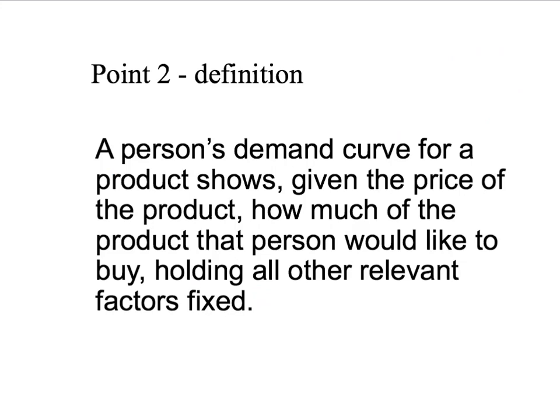Let's give our formal definition. A person's demand curve — notice we're starting with an individual person. Later on in the course, we're going to be looking at market demand curves, but for the moment we're thinking of one person and their demand. So a person's demand curve for a product — our product here is going to be apples — shows, given the price. Notice that we have our price-taking assumption for buyers built into the demand curve. The demand curve only makes sense when we have our price-taking assumption. Given the price of the product, how much of the product would that person like to buy? That's also important: the demand curve tells us what people would like to do, or what they would plan to do. It doesn't tell us what they will necessarily be able to do in a marketplace. Later on in the course, we're going to look at many situations where individuals can't choose the point they would like on their demand curve due to some other constraint.